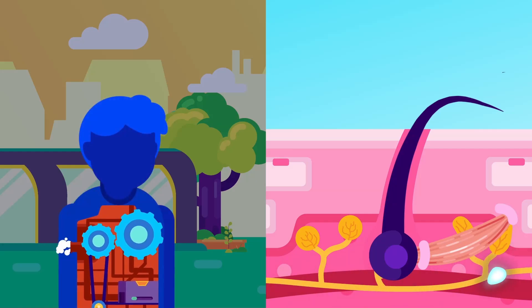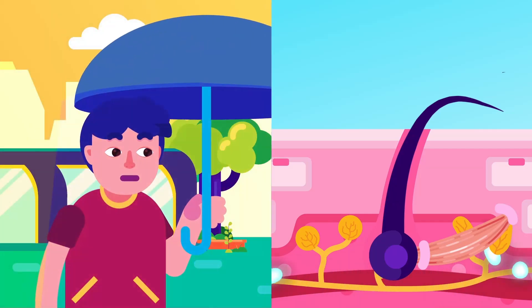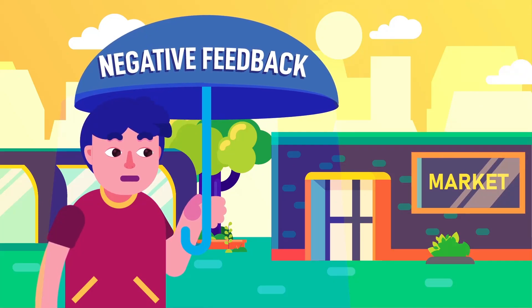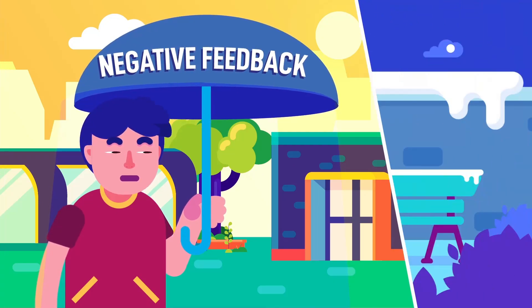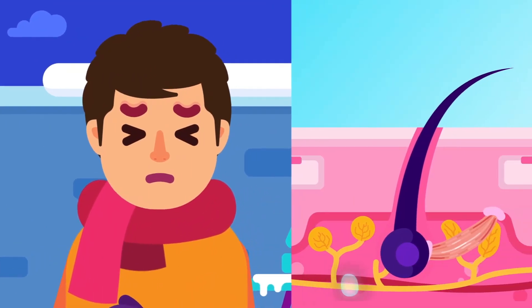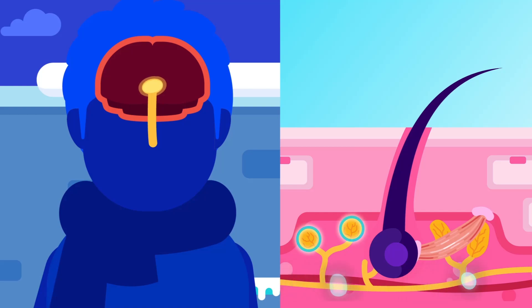As a result, the body temperature decreases. This cooling of the body in this case is called negative feedback. When we feel cold, a fall in temperature of thermoreceptors stimulates the hypothalamus and the neurons are again activated.